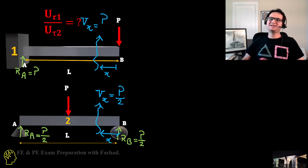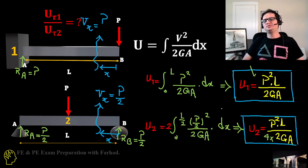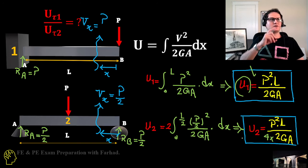If you do the math, U1 equals P²L over 2GA and U2 equals P²L over 8GA. You can easily see U1 is four times bigger in comparison to U2.